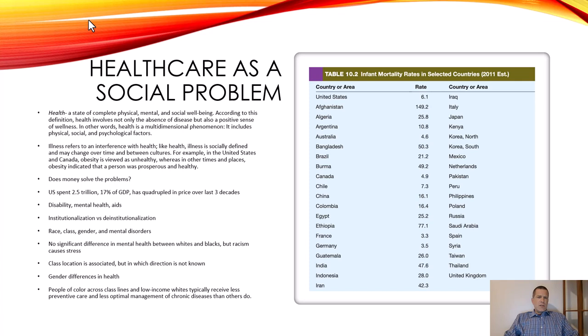Healthcare as a social problem requires us to understand what health means. Health is defined as a state of complete physical, mental, and social well-being. Illness is socially defined, changing over time and across cultures. Society cares about health because if the point of society is to have social roles fulfilled, and those roles aren't fulfilled, society tends to fall apart. It makes sense to invest in taking care of the health of society.